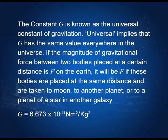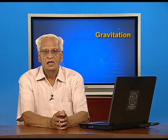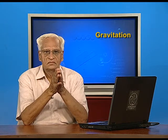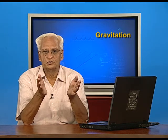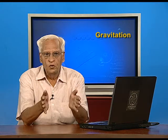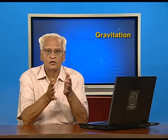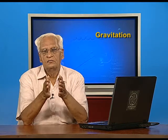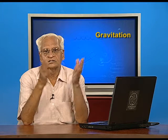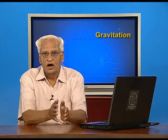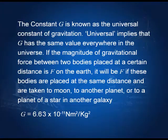Why is it universal? It is universal because wherever you go, this constant has the same value. That means the force between two particles remains the same whether we are on the earth, on some other planet, or on some other star. That is why it is called the universal constant of gravitation. Its value is 6.63 × 10⁻¹¹ Newton meter squared per kilogram squared.